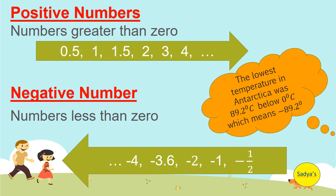Remember the lowest temperature in Antarctica was 89.2 degrees Celsius below 0 degrees Celsius, which means negative 89.2 degrees Celsius. Note that zero is neither positive nor negative.